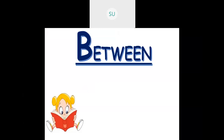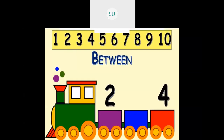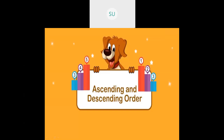Then between. Here I have 4, 5 and 6. If you see 5, it is in the middle of 4 and 6. So 5 comes in between 4 and 6. Between 2 and 4 is 3. Between 7 and 9 is 8. So 7, 8, 9.